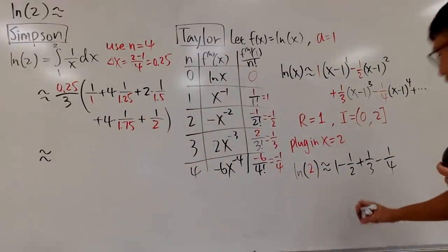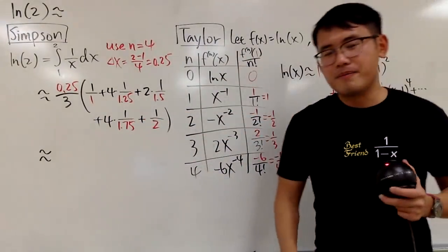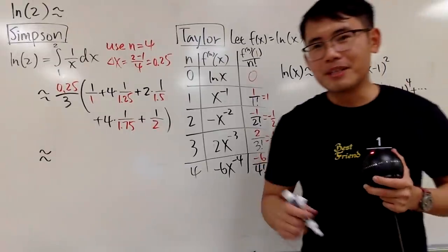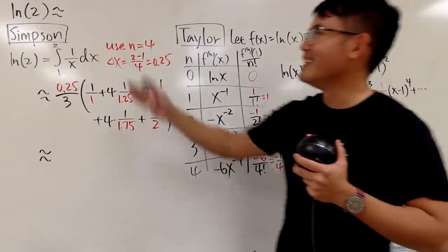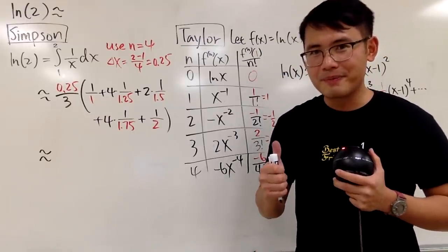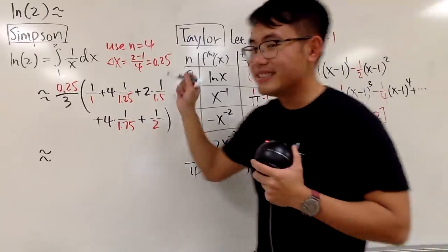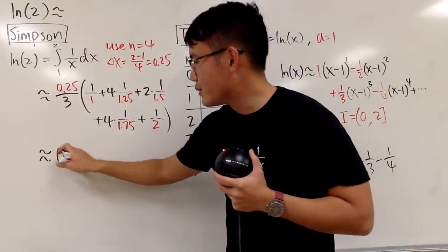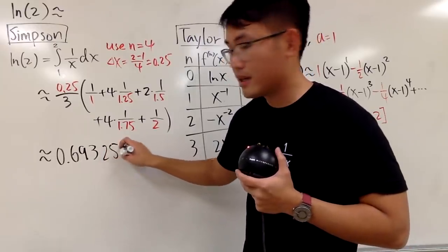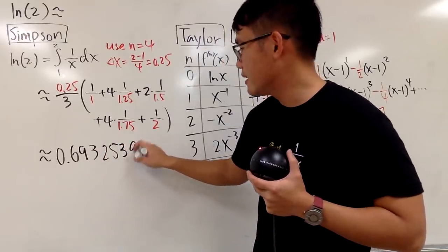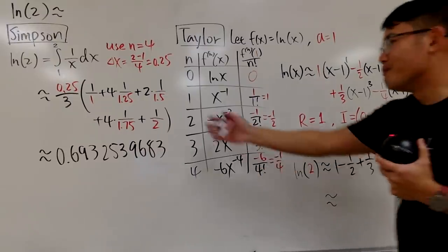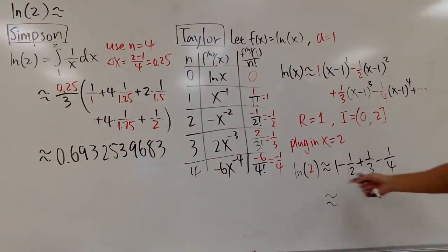Now I'll show you Simpson's rule result and the Taylor polynomial result side by side. Leave a comment and let me know which one you think is closer to the actual value of ln2. Let me calculate and come back. The actual value of ln2 from a calculator is approximately 0.693253968... to ten decimal places.